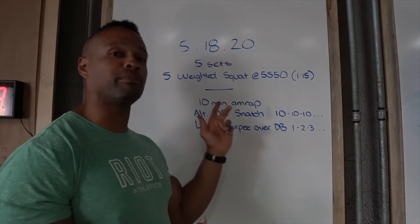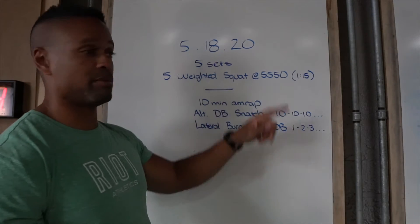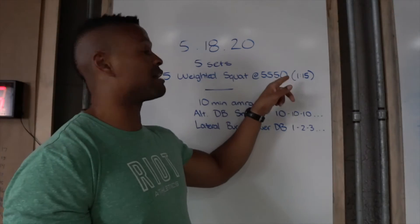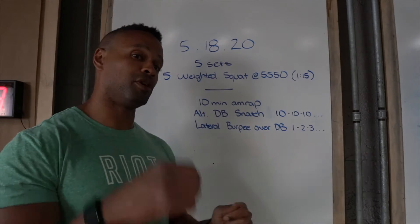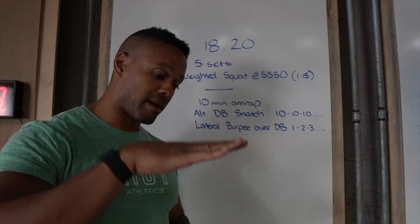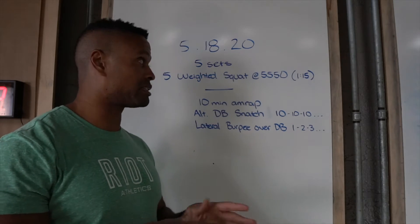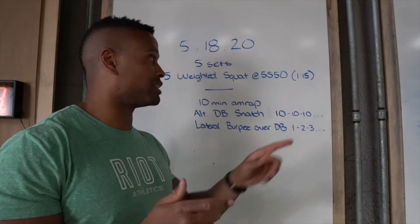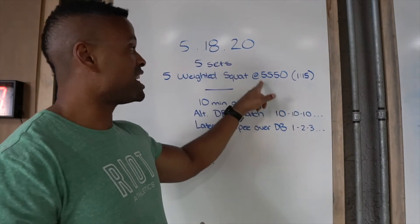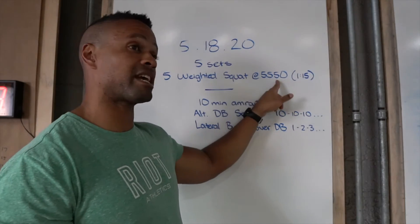I want you just to take the heaviest thing you can manage to move at this tempo, and that is a 5-5-5-0 tempo, which means you go down for five seconds, pause at the bottom for five full seconds, and then you raise for five full seconds. Notice no pause at the top, so we go right back down. So each rep takes the full 15 seconds.